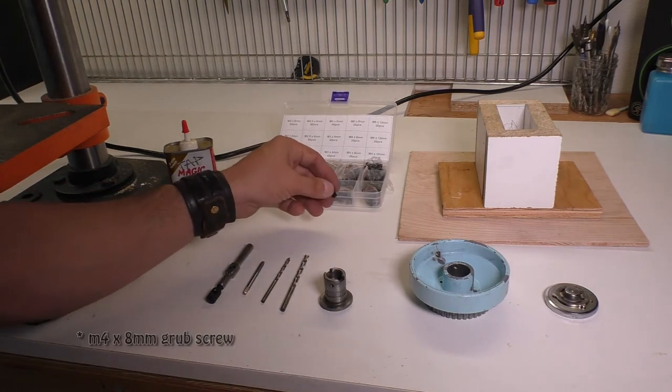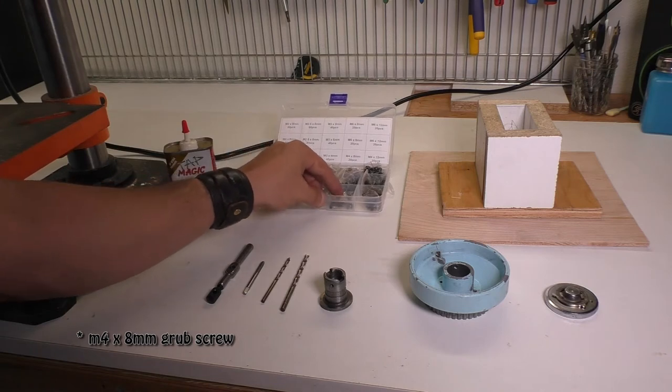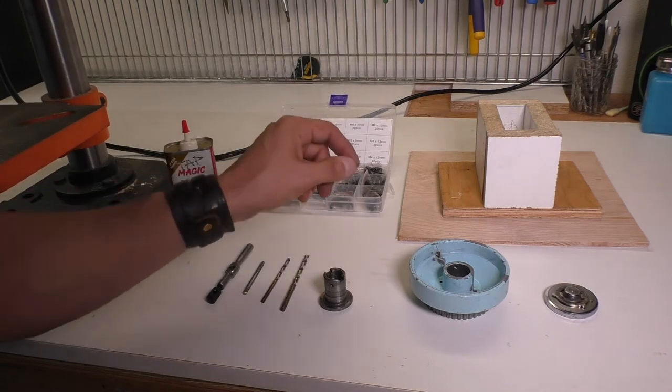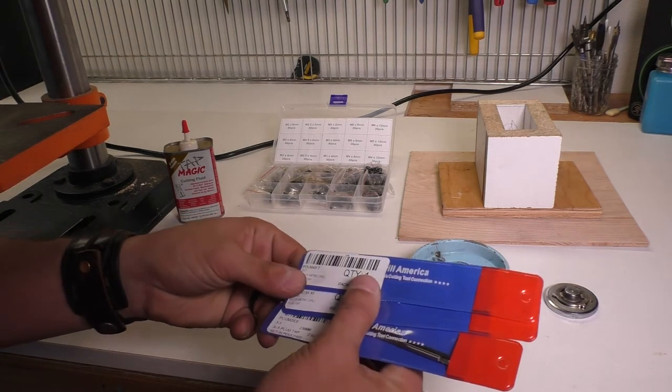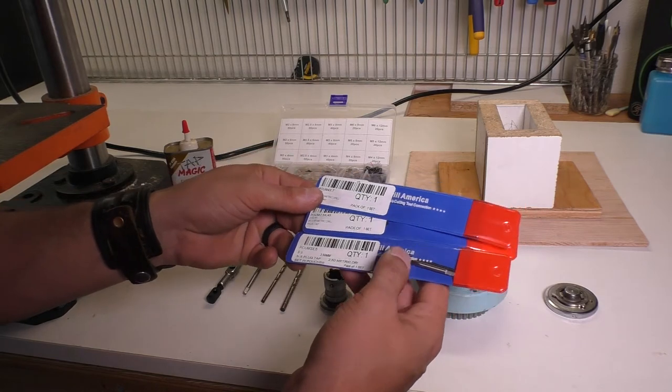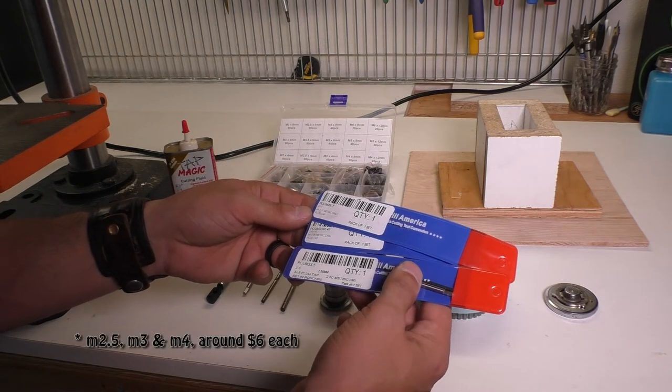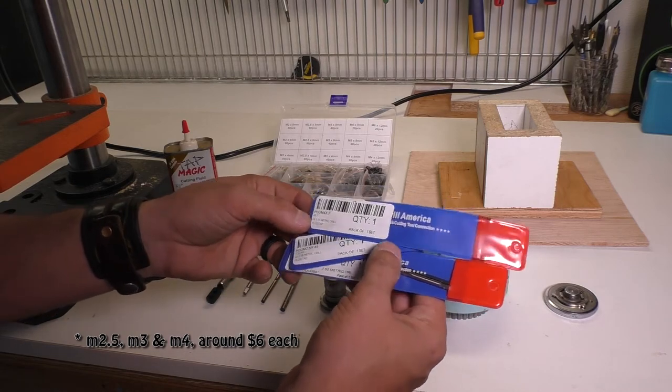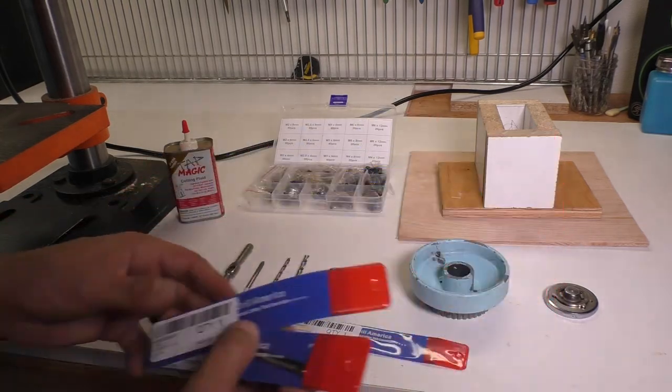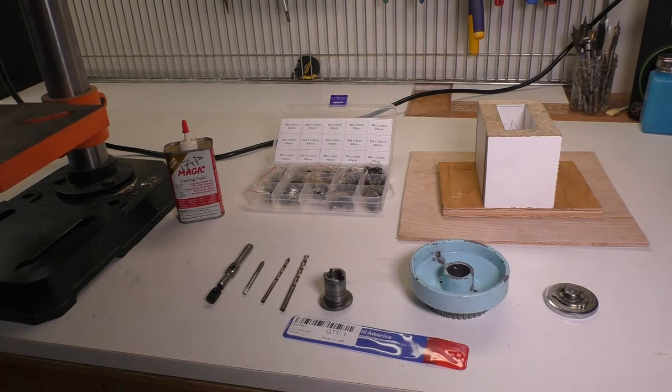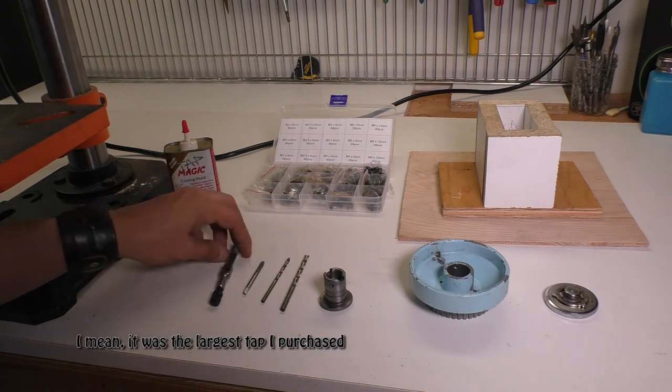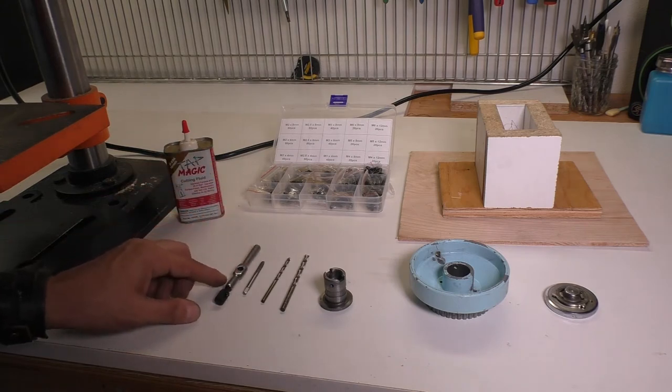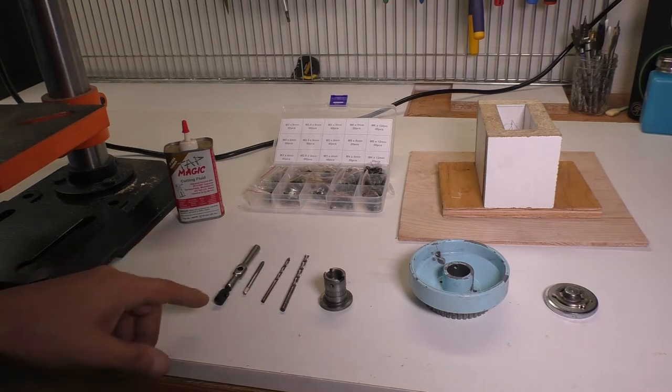So I bought this grub screw set on Amazon for about 10 bucks, and it came with a bunch of different sizes. Then I bought a few of these tap sizes. I actually got 2.5, 3, and 4, but 2.5 and 3 are actually really small, so I went with 4. You'll need the tap, you'll need a tap wrench. This is a Starrett one, and it's actually pretty good. It's the most expensive piece to get this job done.